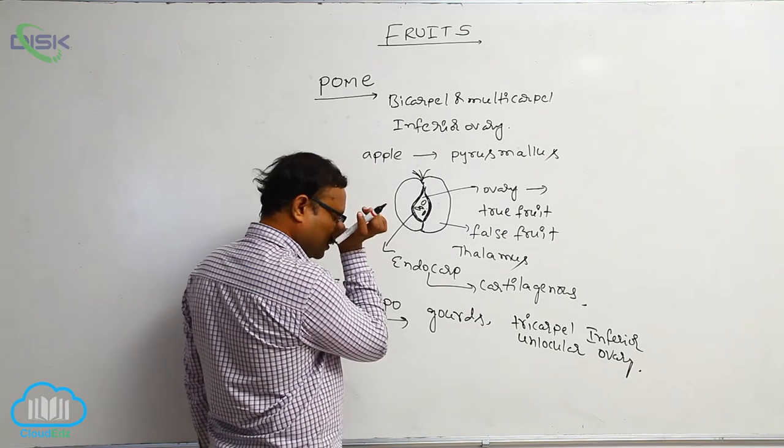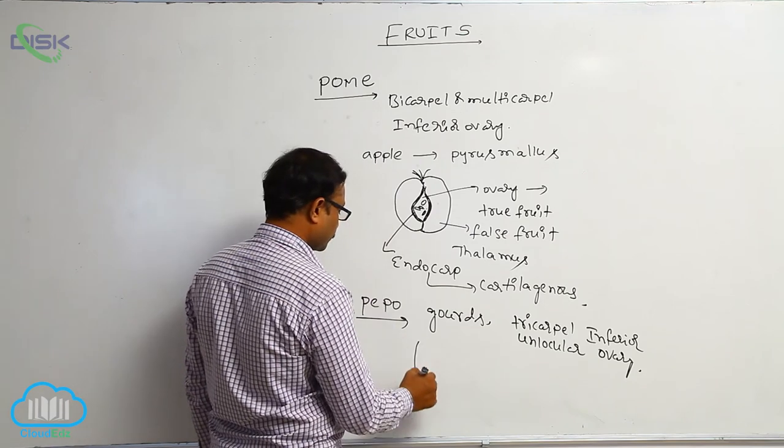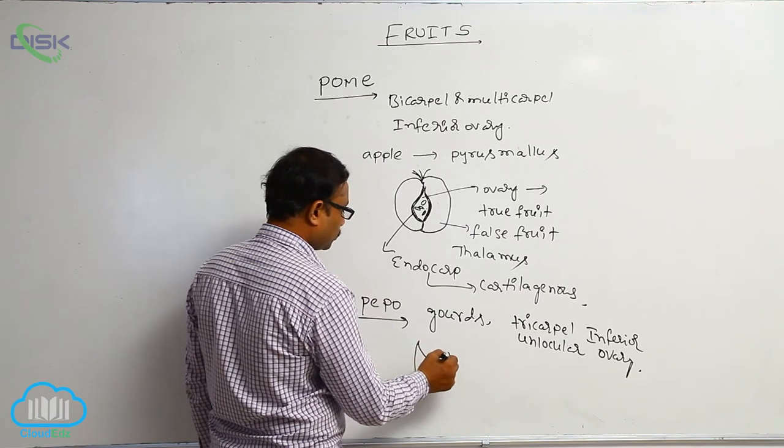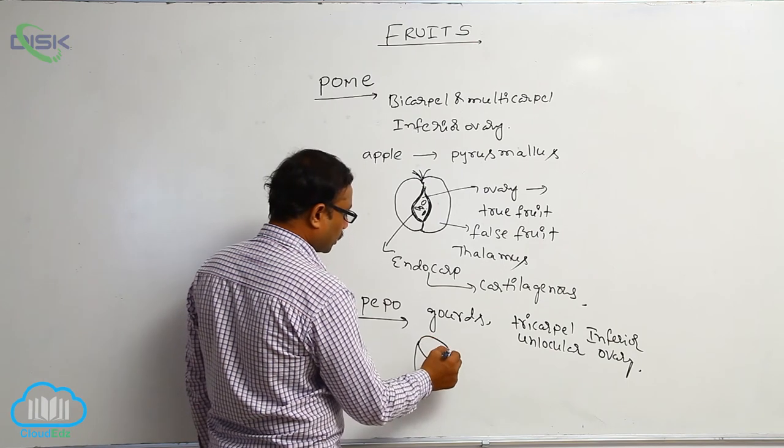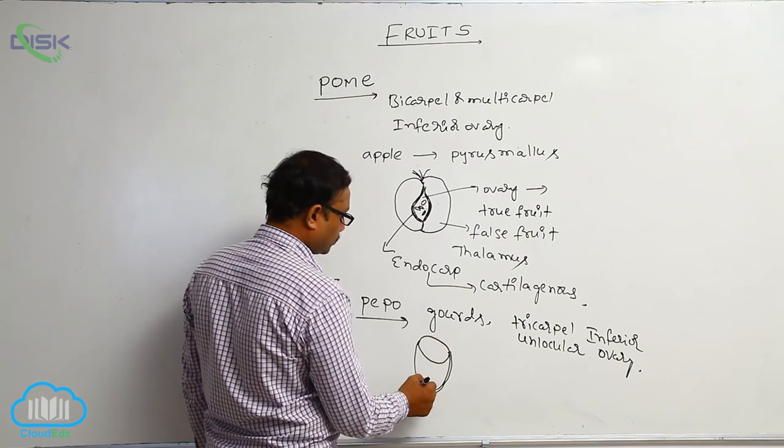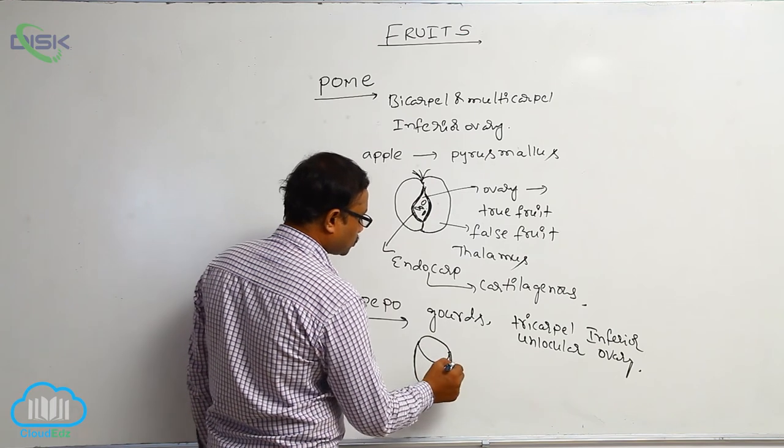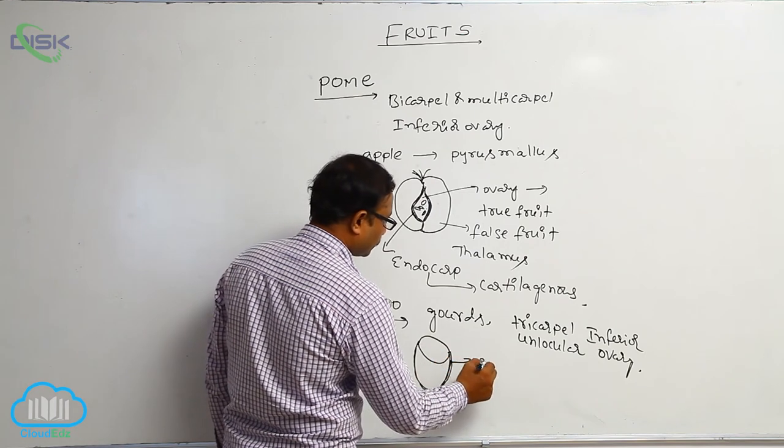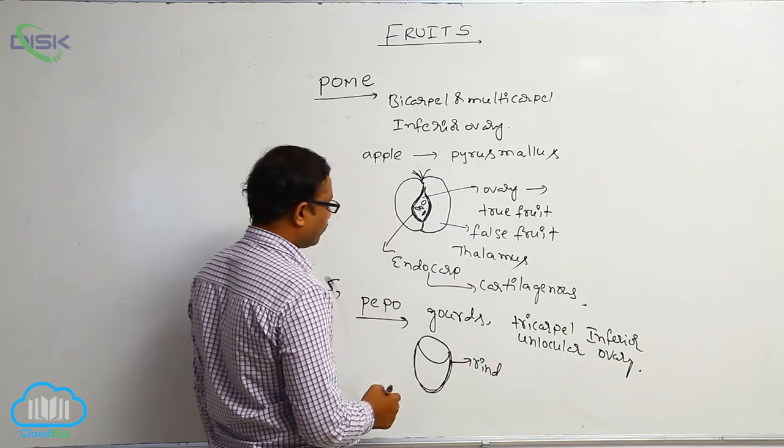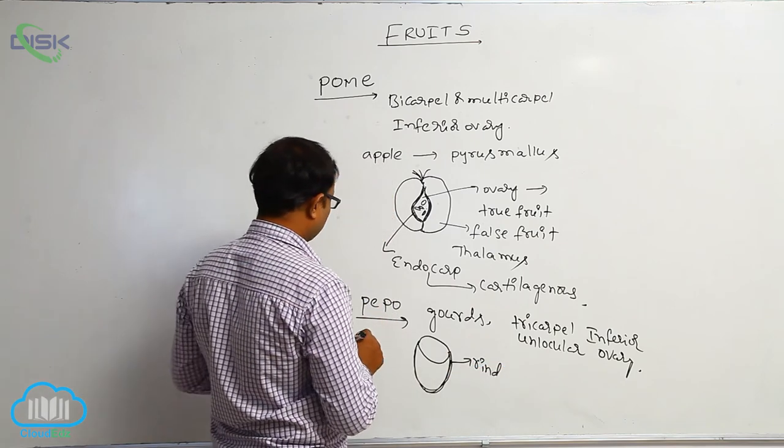In that gourd, for example, you observe it is a fruit. The outer layer is a rough or thick layer, known as the rind. Which fruit having the rind means Pepo.